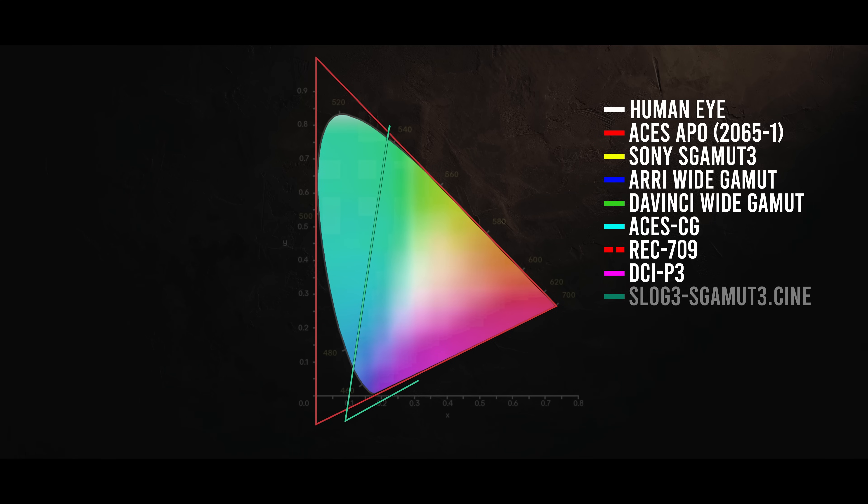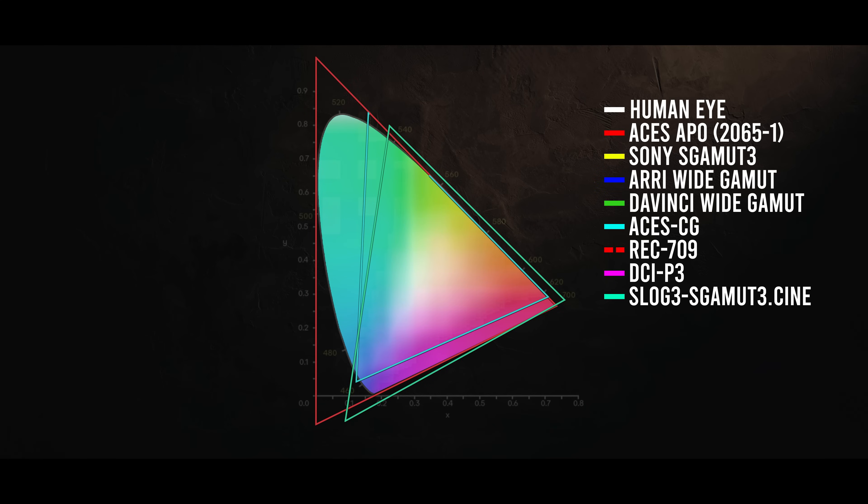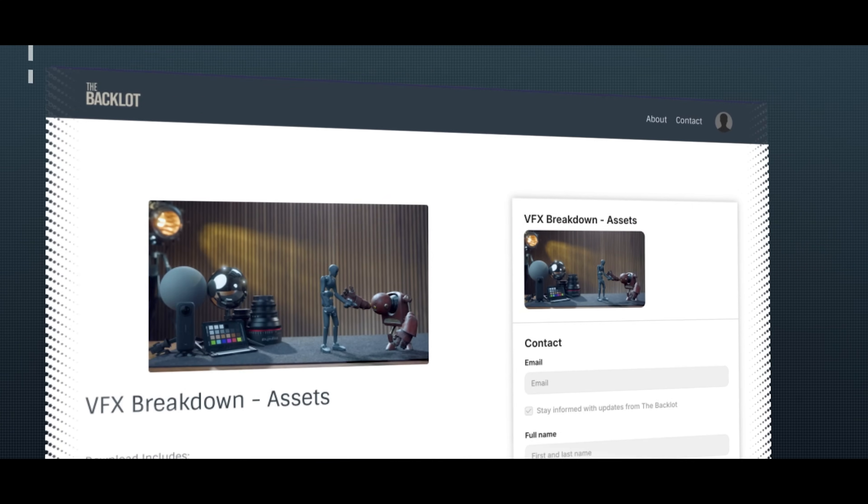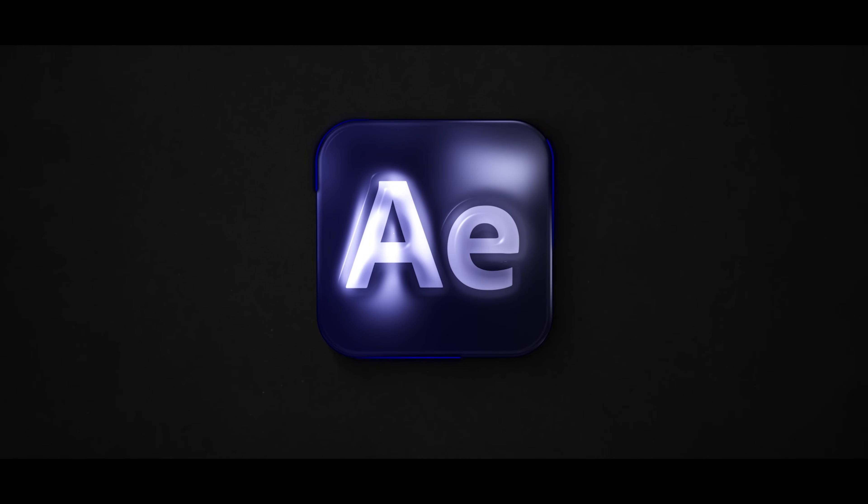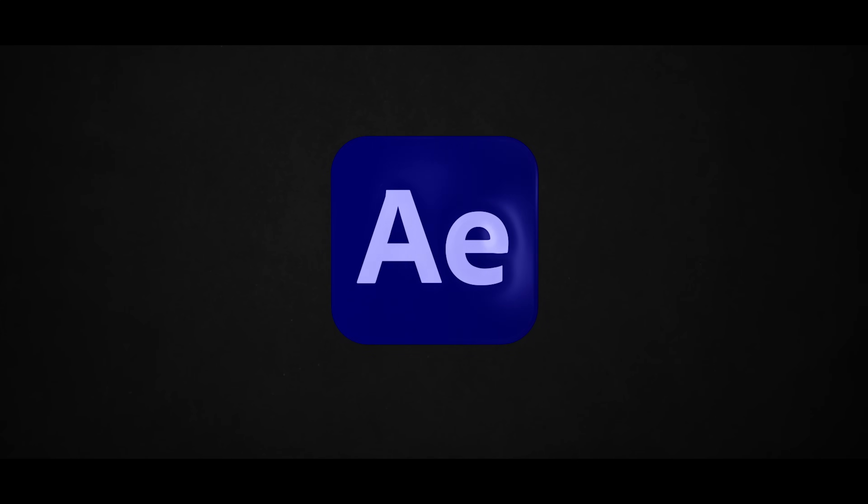The footage was shot using the Sony FX3 in S-Log3 S-Gamut3 Cine color space, and the CG characters were rendered out of Maya using ACES CG. If you want to follow along, I have the exact same assets available for download — just click the link in the description. For compositing today, I'm going to use After Effects. It's a very powerful and accessible program, especially if you have an Adobe subscription. Nuke is the more common standard VFX compositing program, but today we're in After Effects. Let's dive in.